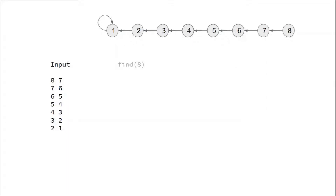If we apply find(8) on this linear tree, a function call to find(8) is made. Since 8 is not the parent, it makes a recursive call to 7, then 7 calls 6, then 5, 4, 3, 2, 1. After reaching 1, node 1 returns the result back up: to 2, then 3, and so on until node 7 returns the result 1 to node 8.